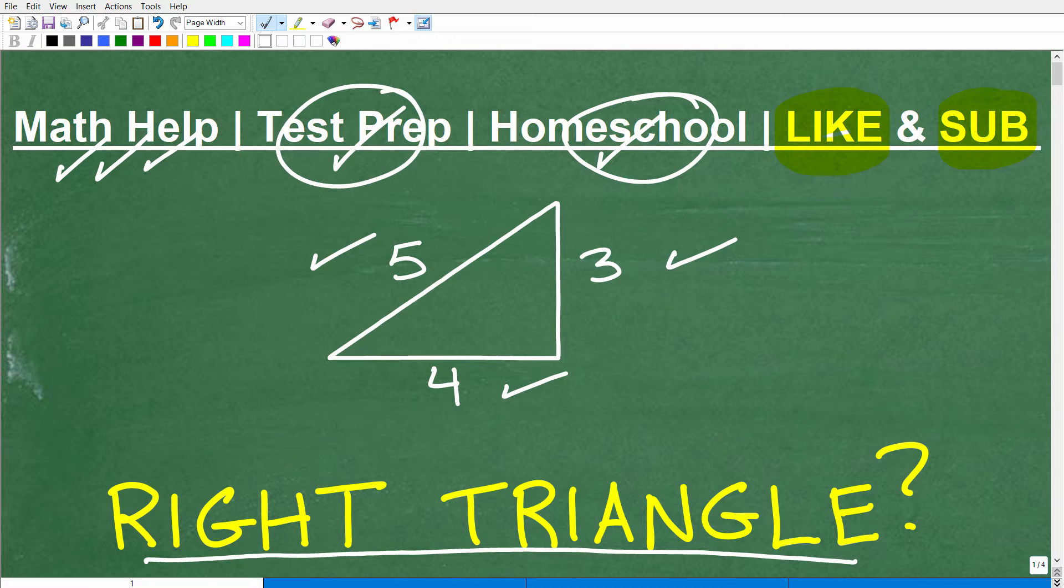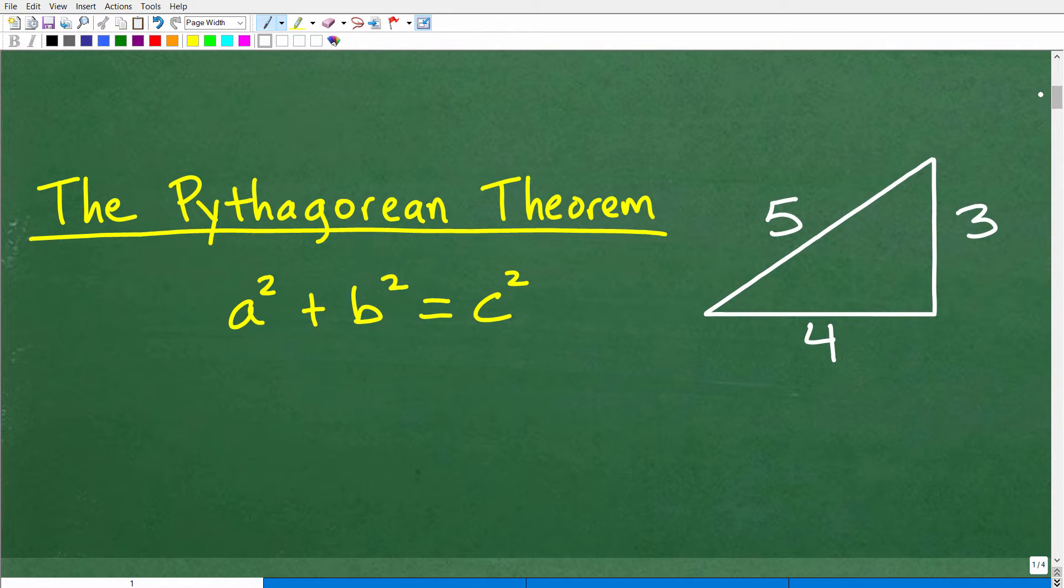All right, so let's get into answering this question. Is this a right triangle? And let's first just answer this question, what is a right triangle? Okay, so here is our triangle. Well, this is a right triangle right here. If one of the angles in our triangle, and remember there's three angles in a triangle, right? So here we have an angle here, an angle here, and then we have an angle over here.